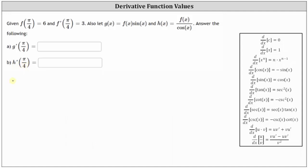To begin, g of x is equal to f of x times sine x. Because g of x is a product of two functions of x, to find g prime of x — the derivative — we need to apply the product rule of differentiation. G prime of x is equal to the first function f of x times the derivative of the second function, which is the derivative of sine x, which equals cosine x, plus the second function sine x times the derivative of the first function, f prime of x.